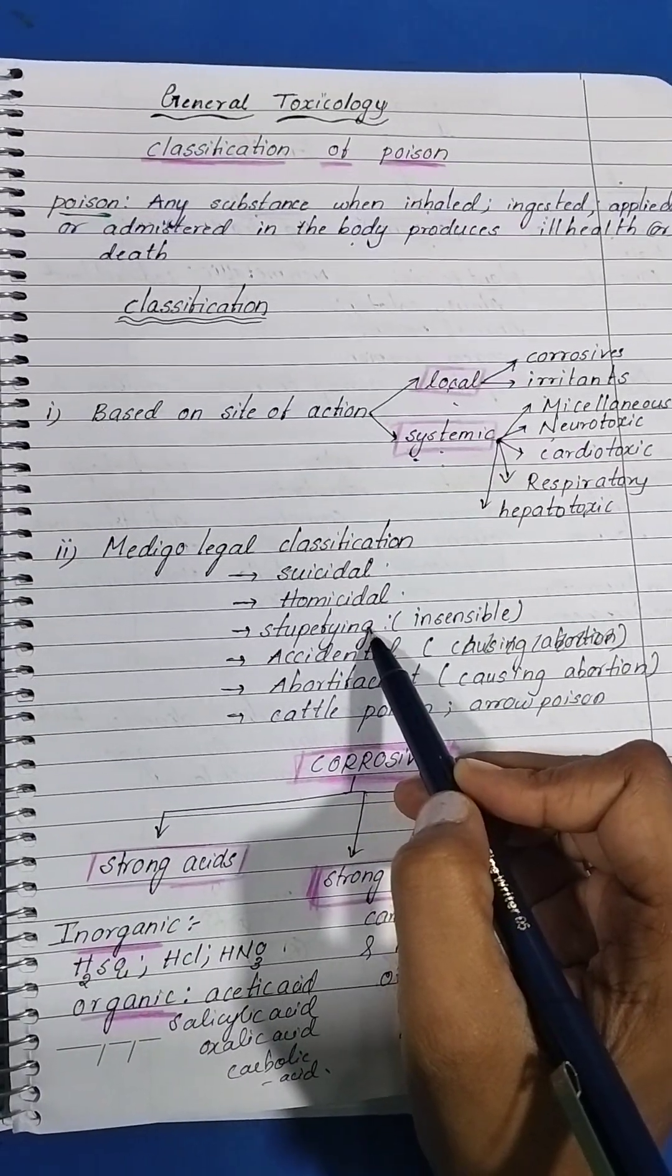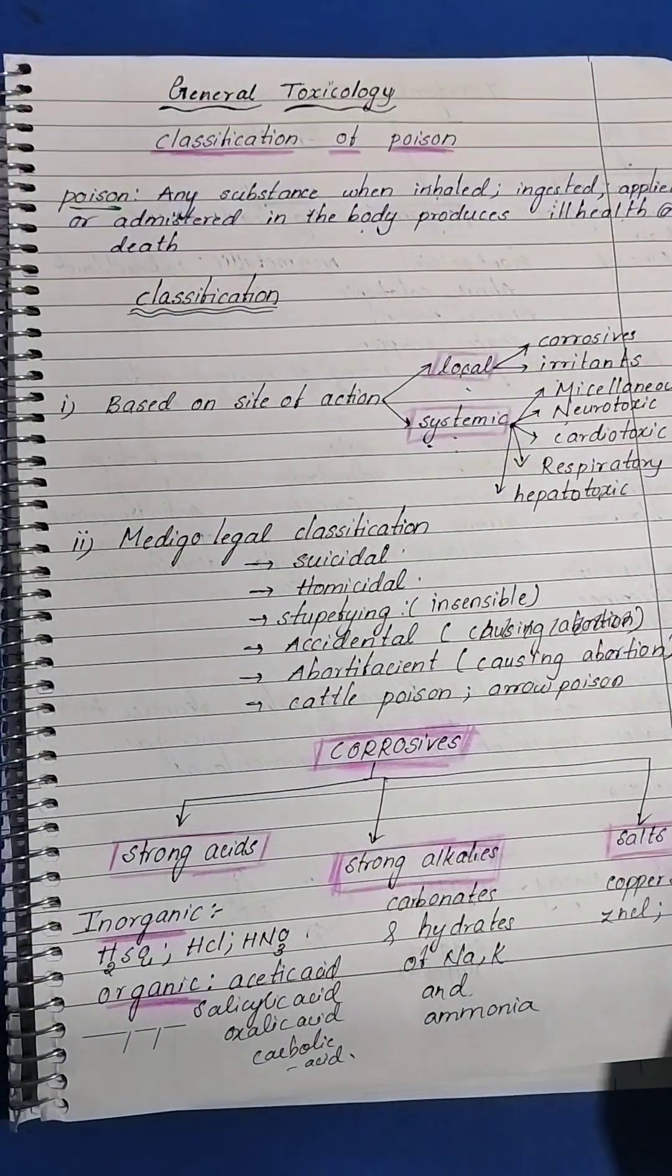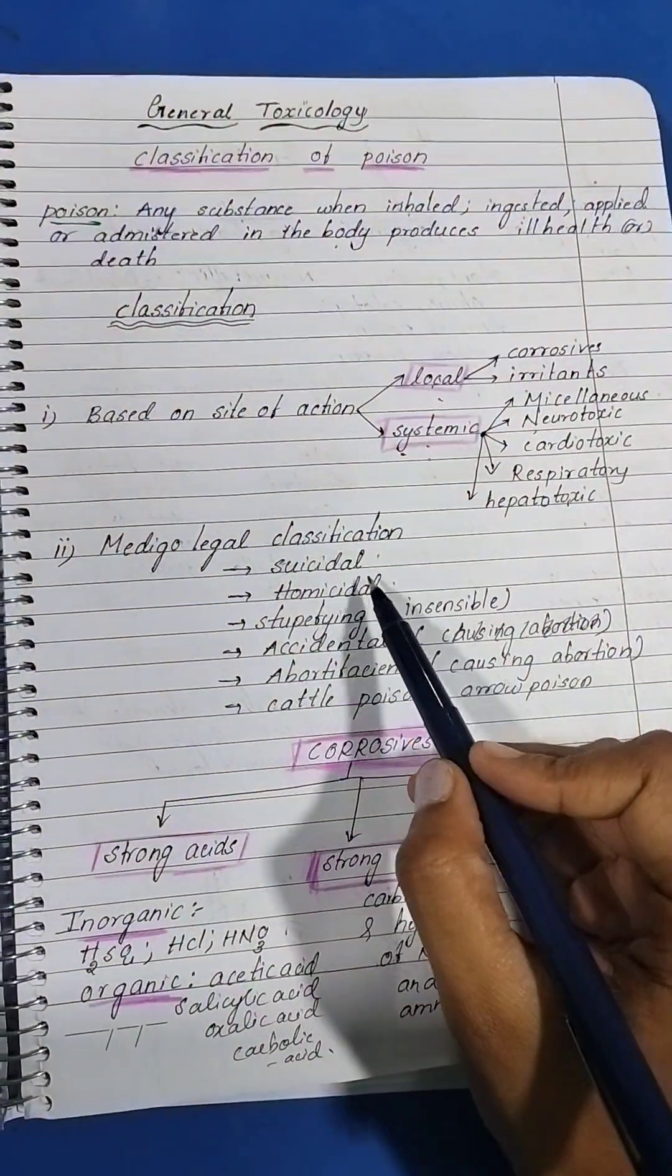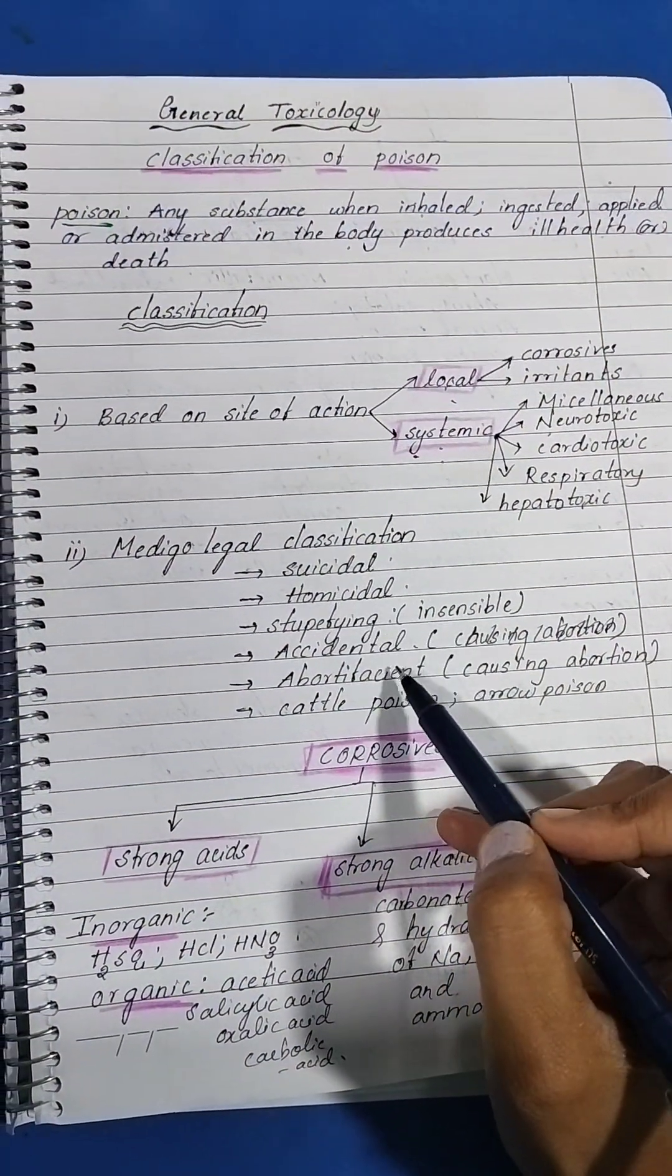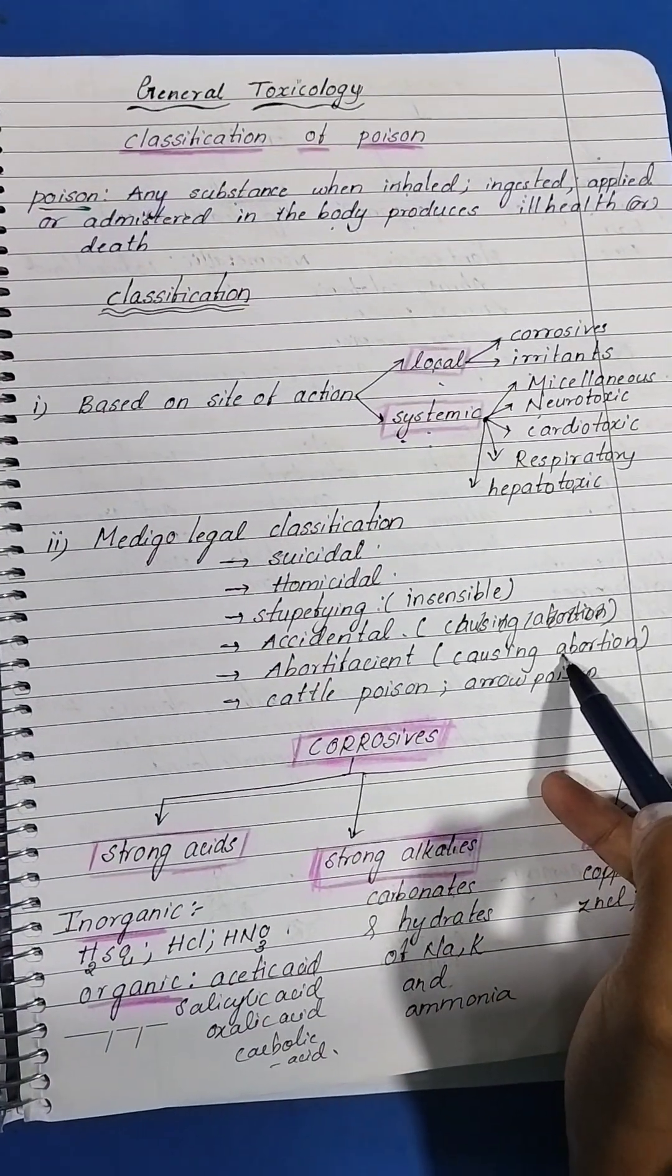Stupefying is when they take that poison and become so insensible they don't know what they're doing, like alcohol, and they lose their senses. Abortifacient causes abortions.